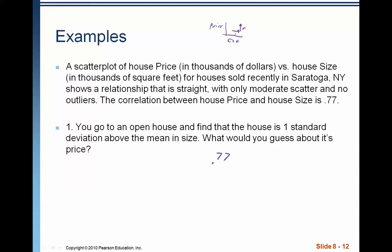So, I would guess that since it's a standard deviation above in size, that it's 0.77 standard deviations above in price. So this relationship in z-score gives us an idea of the increase in terms of the averages as being stated by the correlation.